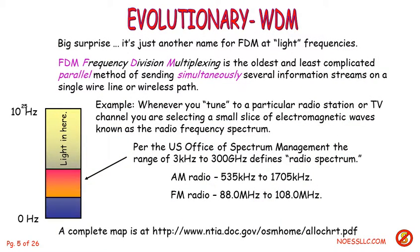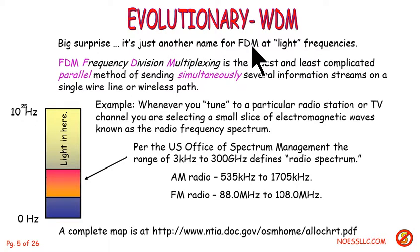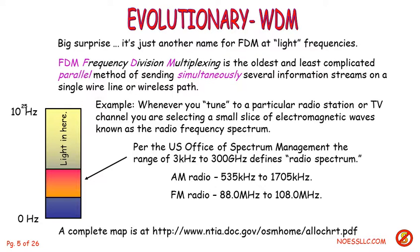Now the evolutionary process of wavelength division multiplexing — big surprise to a lot of people — it's just another name for FDM, frequency division multiplexing. It's the oldest and least complicated parallel, because we're going to put everybody out there at the same time on the facility, either wire or radio system, or when we get to wave division multiplexing on the same fiber.